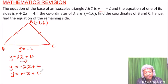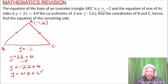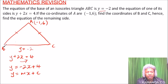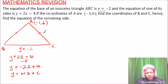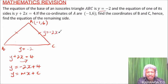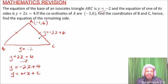Looking at our diagram, when a line slants from right to left the gradient is positive, and when it slants from left to right the gradient is negative. From this we can deduce that AC is the line whose equation is y = -2x + 4.